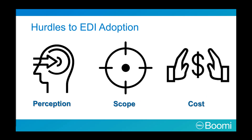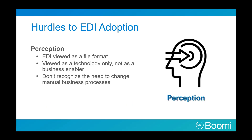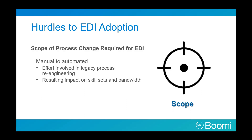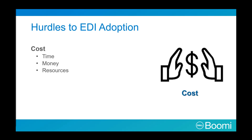There are three hurdles new companies must overcome for EDI adoption. They are perception, scope, and cost. With perception, EDI is often viewed as a file format, when in fact it is much more. In addition to being a technology, it is also a business enabler. Many companies do not recognize the need or support the change of manual business processes. The scope of process change needed for EDI is significant — going from a manual to an automated process is a large scope project, with effort involved in legacy process re-engineering, impacting both skill sets and bandwidth. Finally, time, money, and resources are demands, but the payoff at the end can be big. This concludes our introduction.